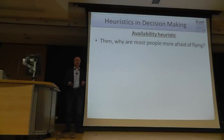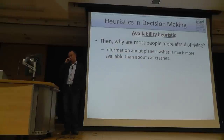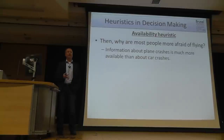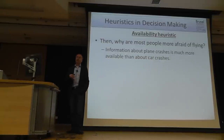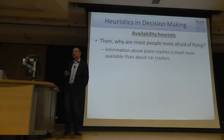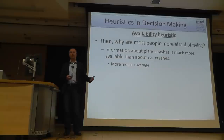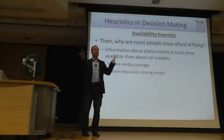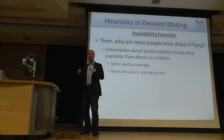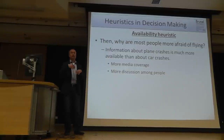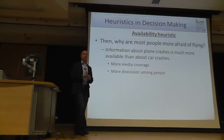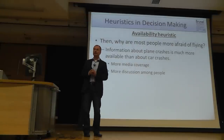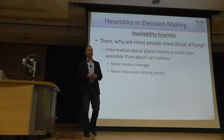Why are people more afraid of flying? The explanation comes from the concept of the availability heuristic: information about plane crashes is much more salient in the media, so it's more available — more media coverage, more discussions among people. Last year with the lost plane MH370, you could overhear everyone speaking about that one plane. Probably during their five-minute conversation, more people died in car accidents than were passengers on that plane.